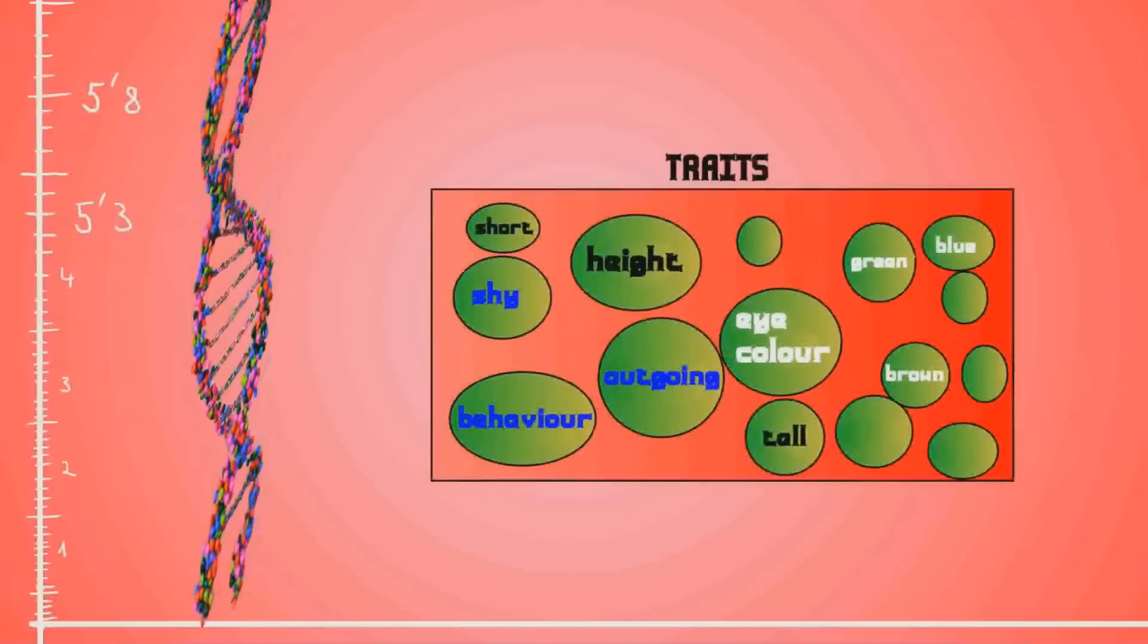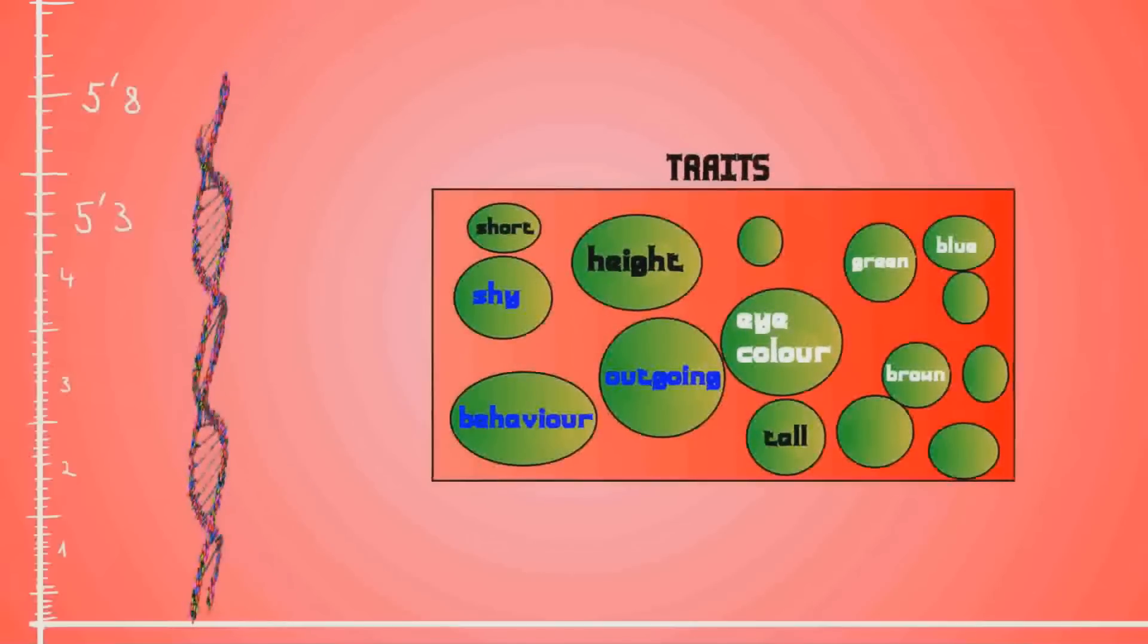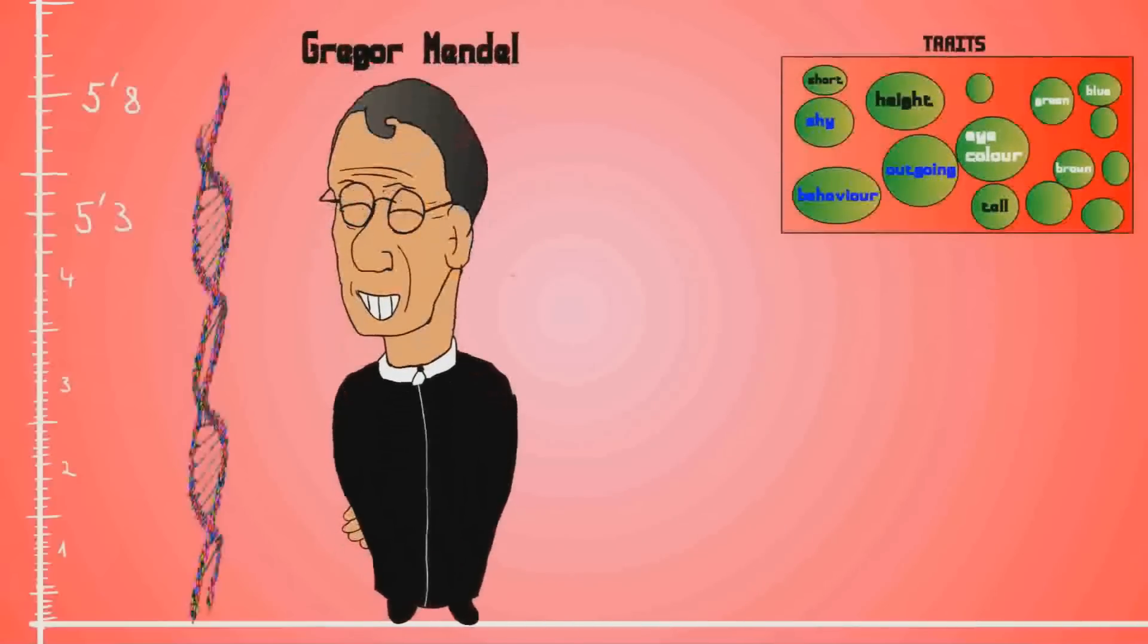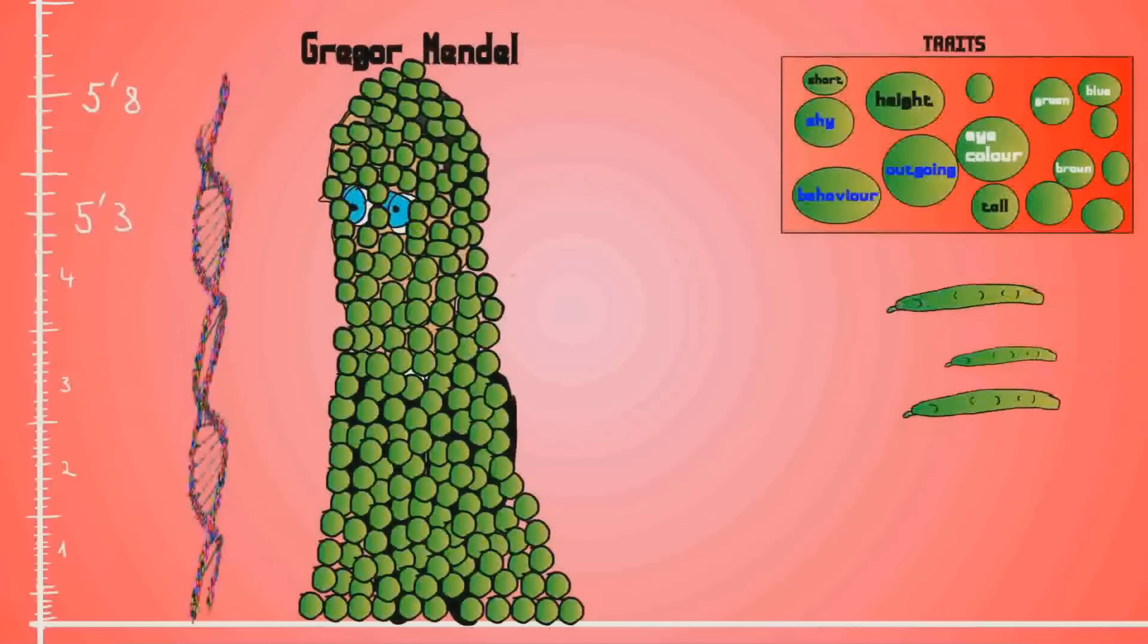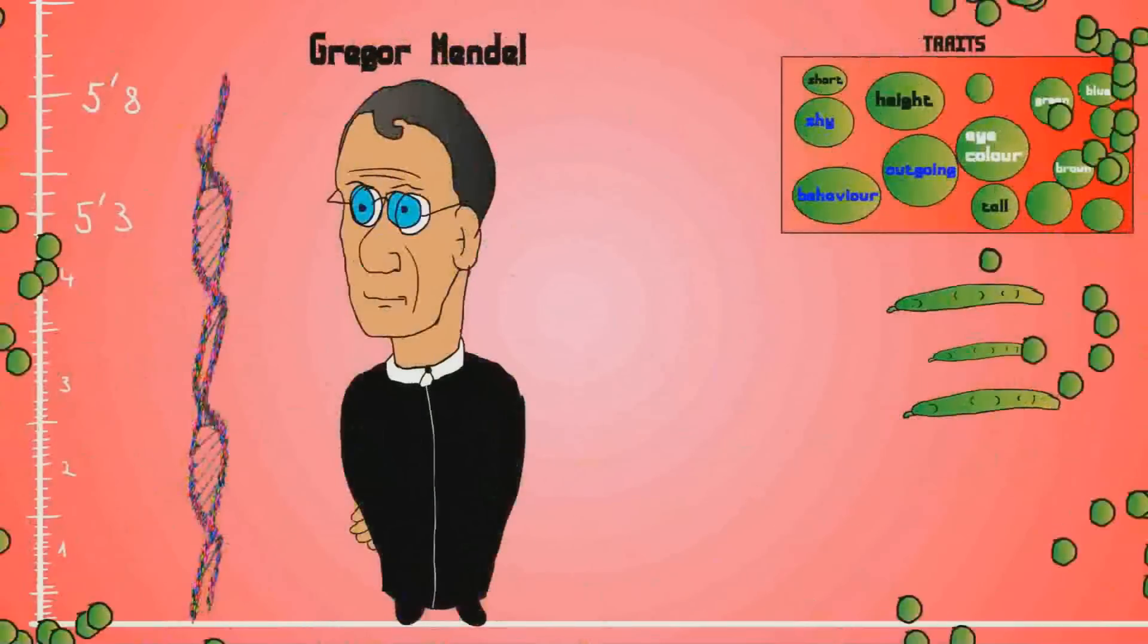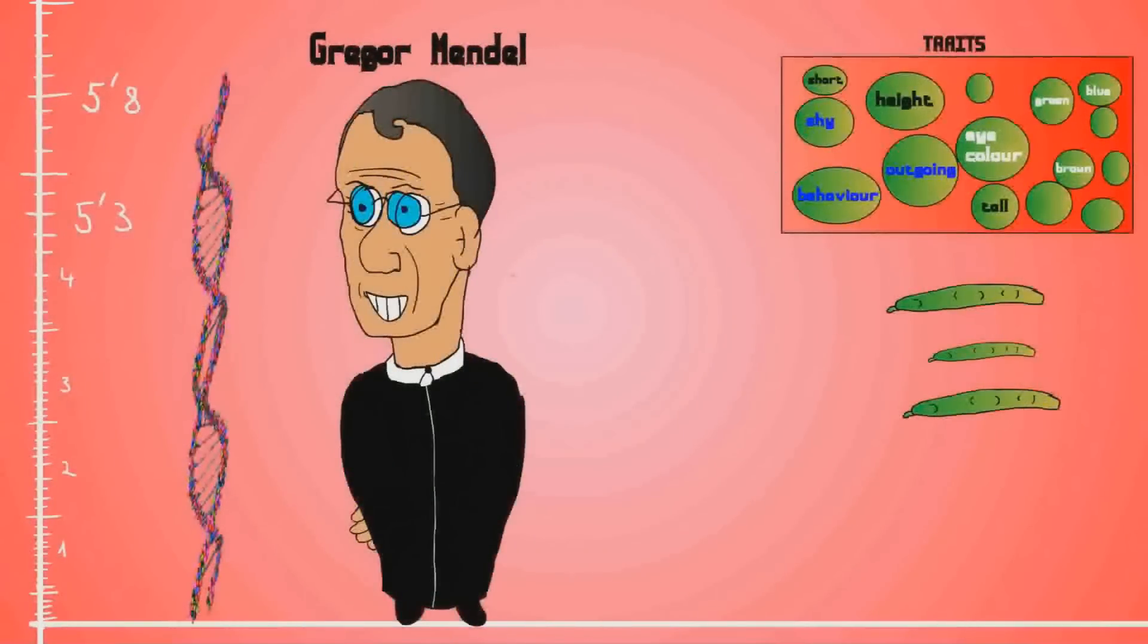Some traits can be described as either on or off. One of the main contributors to this understanding of genetics is Gregor Mendel. He worked on pea plants for years studying how these traits worked. Thanks to his work, now they're pretty simple.